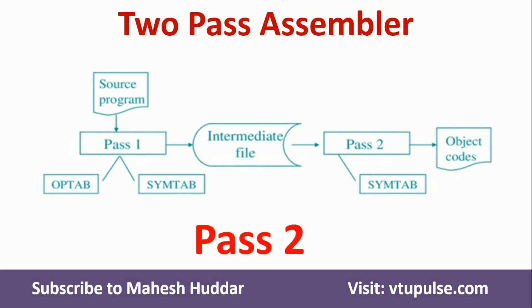Welcome back. A SIC machine uses a 2-pass assembler to convert an assembly language program into an object program. In the previous video I discussed the pass1 assembler. In this video I will discuss the pass2 assembler.